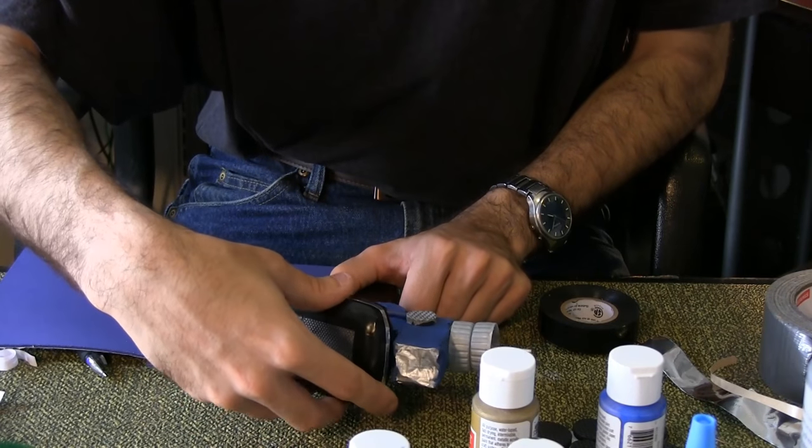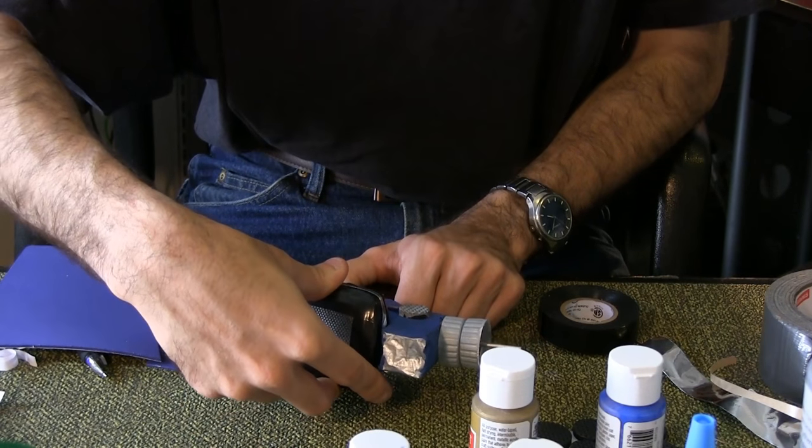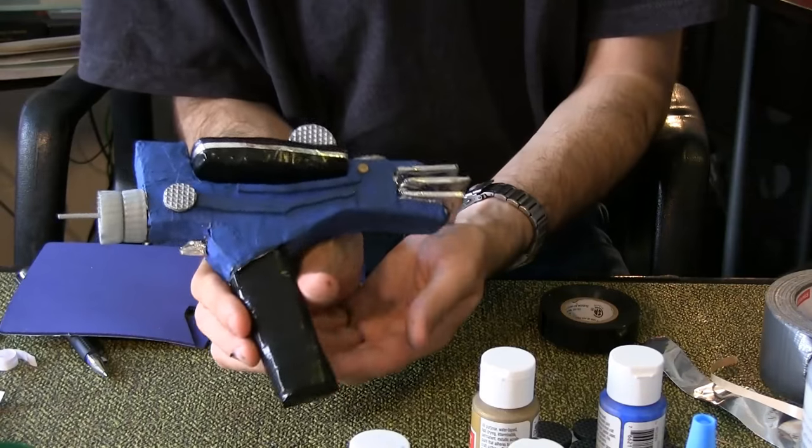Place the Type 1 phaser into the Type 2 phaser. And there's your finished phaser. Thanks for joining us on the Prop Master's Handbook. Now I'm off to start my Starfleet training.